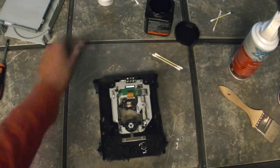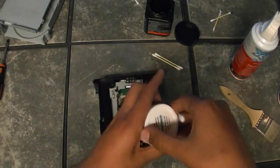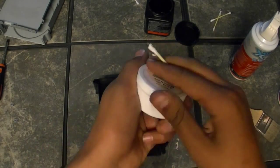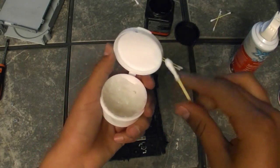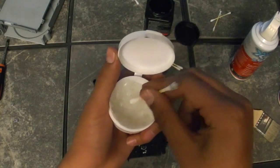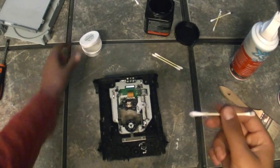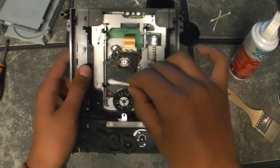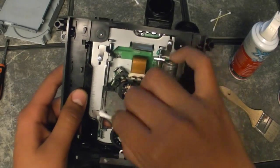Now what you want to do, you want to get your grease, and then on the clean side, you want to get some and then put it on the silver bars.